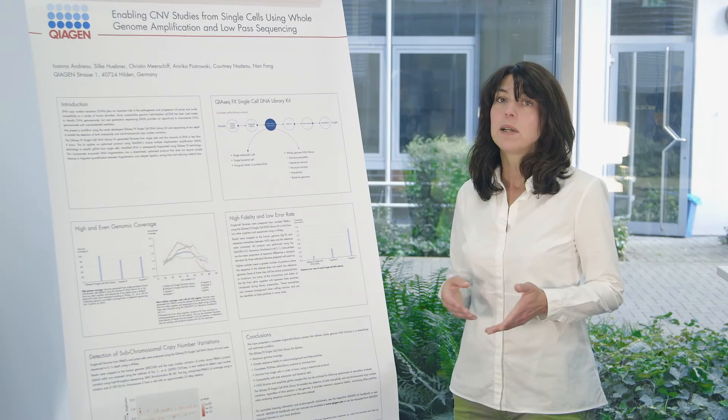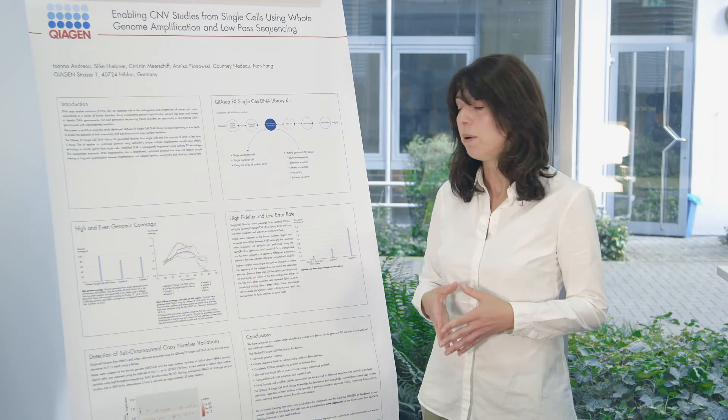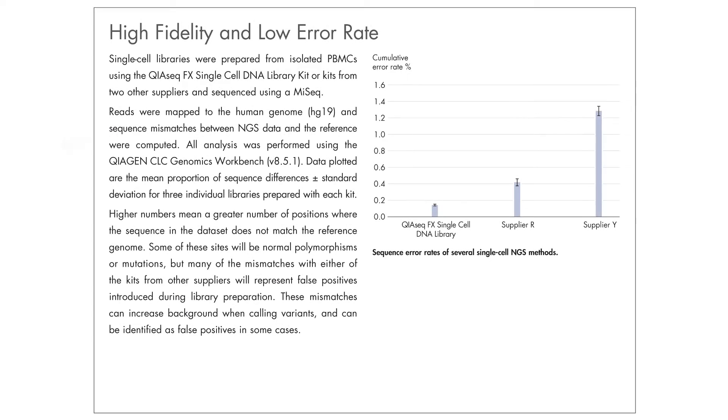So the next point I would like to go in is the fidelity of the library preparation. Here we have sequenced again single cells using different kits and after sequencing we have mapped the data reads on the human genome, and what I'm showing you here is the proportion of mismatches that we have while aligning while mapping the reads to the reference genome.